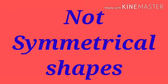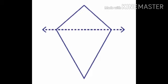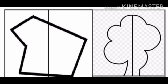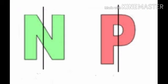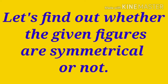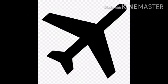Now let's see not symmetrical shapes. Here are some pictures — we can see the line of symmetry does not divide the pictures into two equal parts, so they are not symmetrical figures. We can also see some alphabets that are non-symmetrical figures. Now let's find out whether the given figures are symmetrical or not symmetrical.